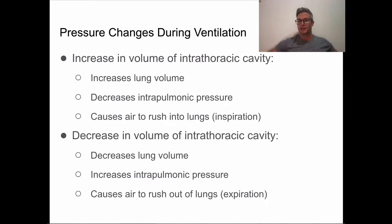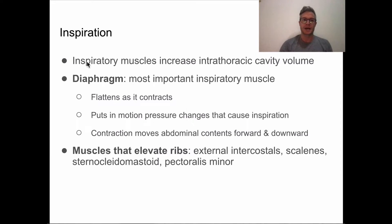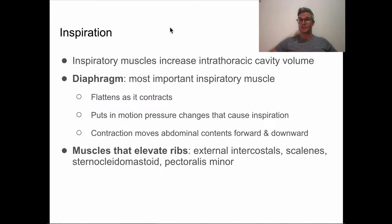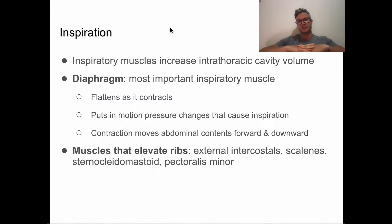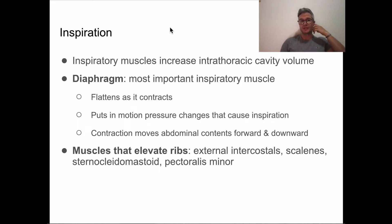The way we increase intrathoracic volume is through our diaphragm. As we breathe in, we have this dome-shaped muscle that closes the bottom of the ribcage. As we breathe in, it contracts — the muscle tightens and shortens. Its long position is the dome shape; its tightened position is flat. As it flattens, it increases the total volume of the lungs.